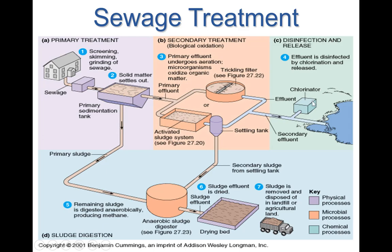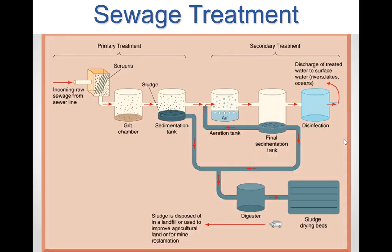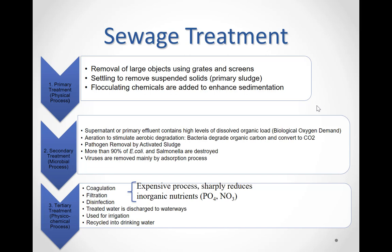The remaining liquid on top is relatively clean due to microorganism activity. It is chlorinated to kill remaining harmful microorganisms and then released into the ocean, lakes, or rivers. It is very important to understand which part is primary treatment — removing large objects and aiding settling — and which part is secondary treatment, which is mostly biological, using both anaerobic and aerobic conditions to aid digestion.